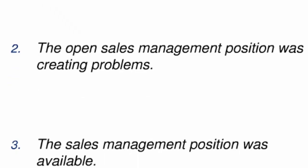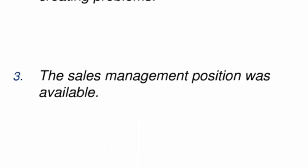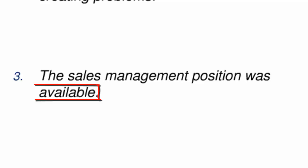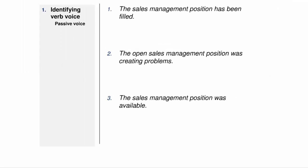Let's try one more example. Is there a form of BE in sentence 3? Yes, that would be WAS. And is WAS followed by a verb? No. AVAILABLE is not a verb. It doesn't really matter if you know what it is as long as you know that it's not a verb. The fact that it's not a verb ending in ED means that sentence 3 is written in ACTIVE, not passive voice.